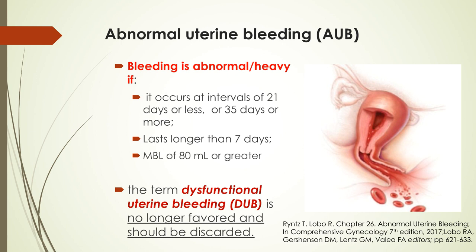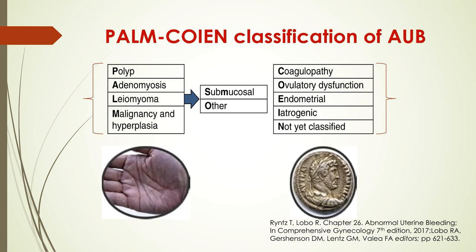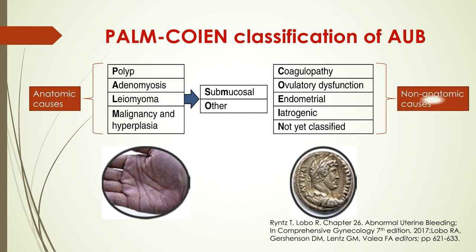This is the PALM-COEIN classification of Abnormal Uterine Bleeding, and each of the letters in this acronym represents the structural or anatomic and non-anatomic processes of AUB. The PALM part represents the anatomic processes, while the COEIN part represents the non-anatomic processes.